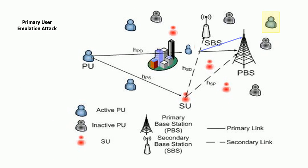A selfish attacker is a rational attacker in the sense that if it is detected by legitimate secondary users and the secondary users reclaim the spectrum opportunity by switching back to the band, it has to leave the band. So the selfish PUE attack is one where it is possible for secondary users to cooperatively monitor spectrum activity and, if a particular node is identified as malicious, compete for that spectrum against the attacker.